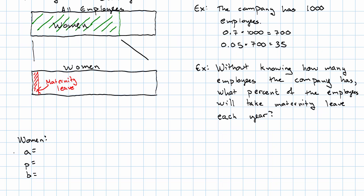For the women, the base is all employees. The percent is 70%, which I'll write as 0.70, and the amount is the number of women, which we know will be 0.70 times the number of all employees.